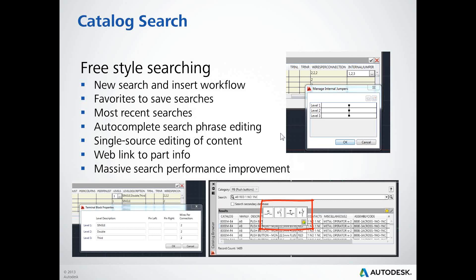With the new 2015 version, you're working inside a single interface to enter all information about a part, including catalog numbers and descriptions. This new interface also makes it easier to search for components — it's been changed to a freestyle type search. Some of our tests have shown it can be up to 3,000% faster for a catalog lookup, so those long searches should be a thing of the past.